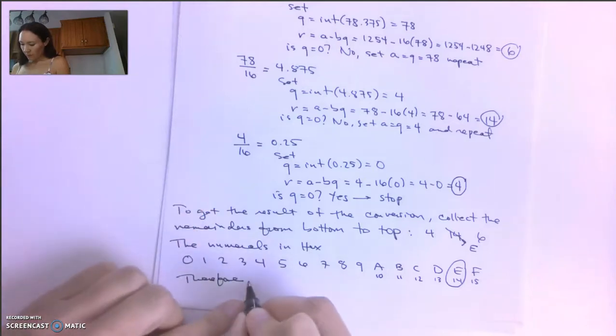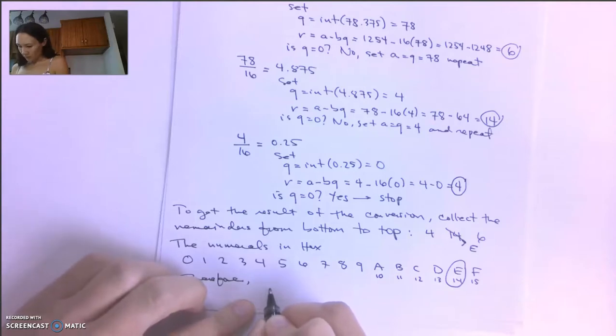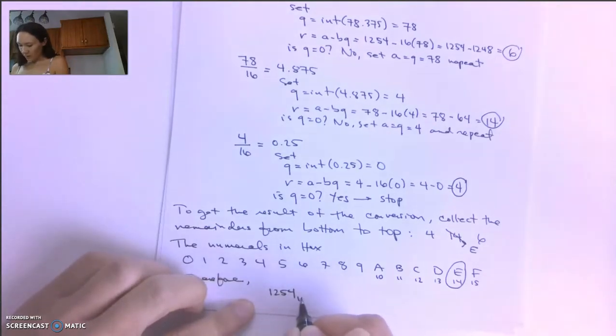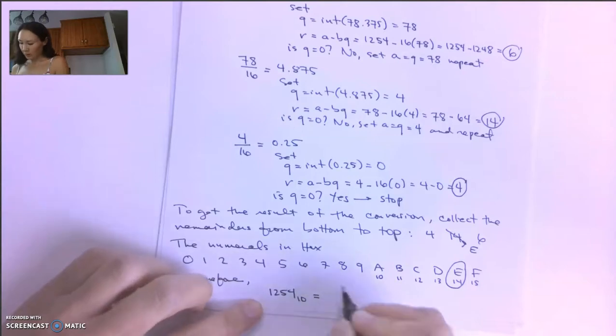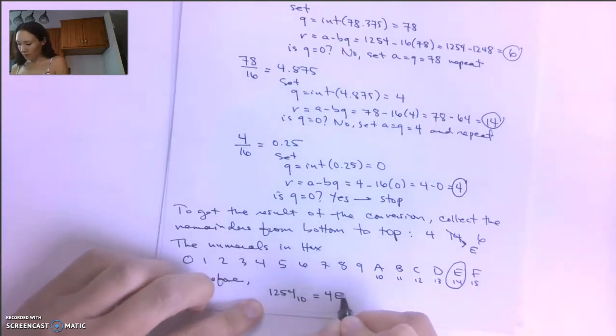Therefore, our conversion is 1254 in decimal is equal to 4E6 in hex.